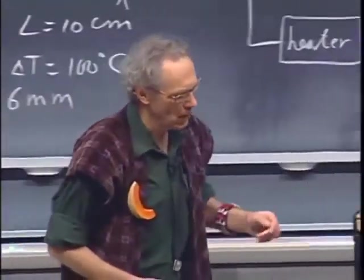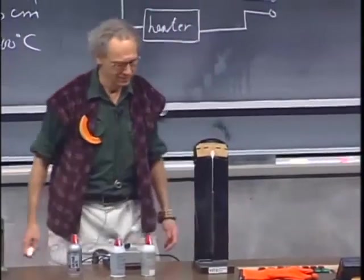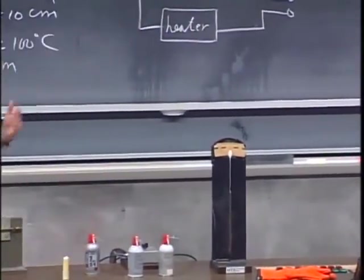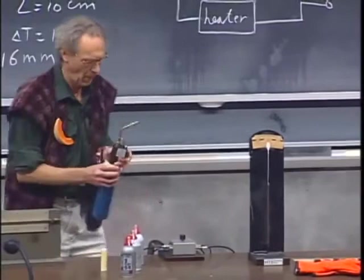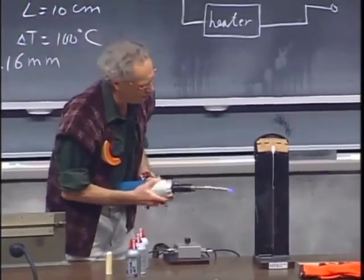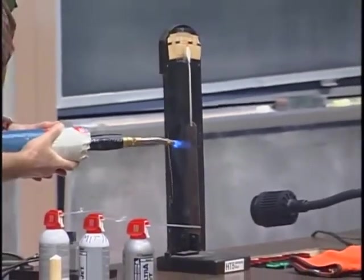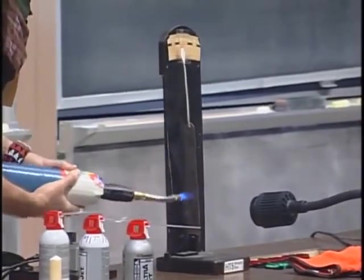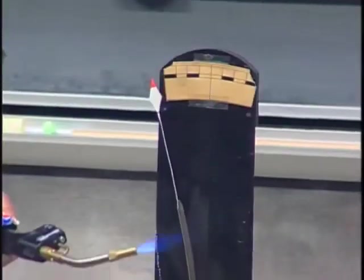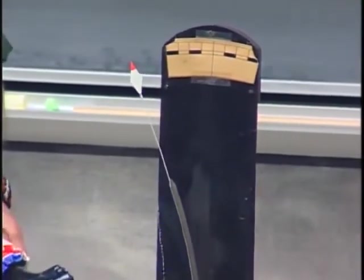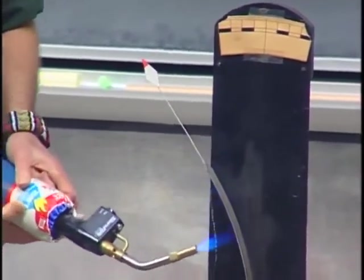I have here a bimetal. One side, I believe, we believe is aluminum, and the other side, we believe, is iron. And when I heat that, you will see that it starts to bend. Here we go.